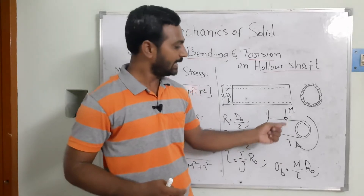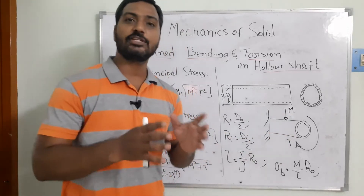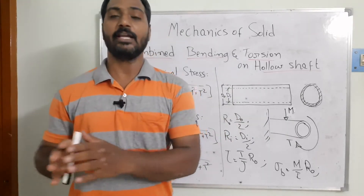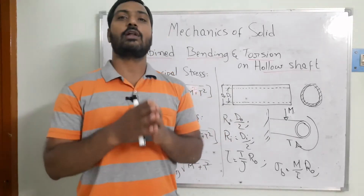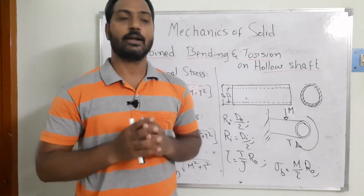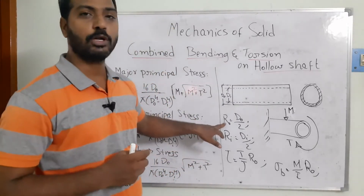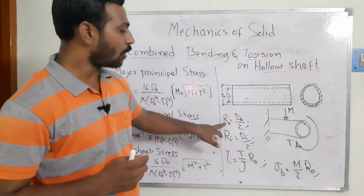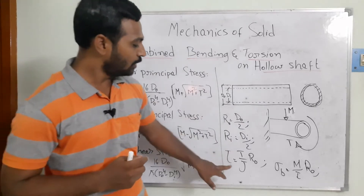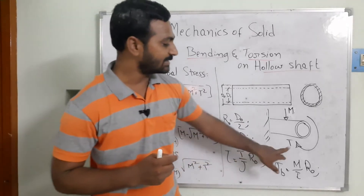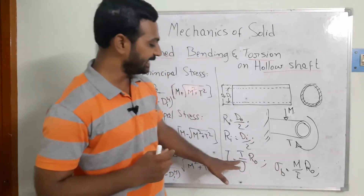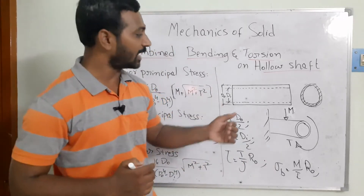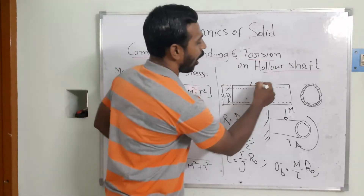As I have graphically illustrated here, we have both the torque and the bending moment. In this combination, the governing equations developed individually for bending moment and torsional stresses are not valid alone — we need to club them together to get the resultant. I am calling D-not by 2 as the outer radius and D-i by 2 as the inner radius. The shear stresses developing due to torque are: τ = (T / J) × R-not.